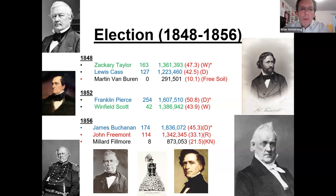The next president, James Buchanan, was the last president before the Civil War. He ran against John Frémont, the first Republican candidate. Buchanan was considered to have the best résumé of any person who had run for president, but was a completely ineffective leader prior to the Civil War.